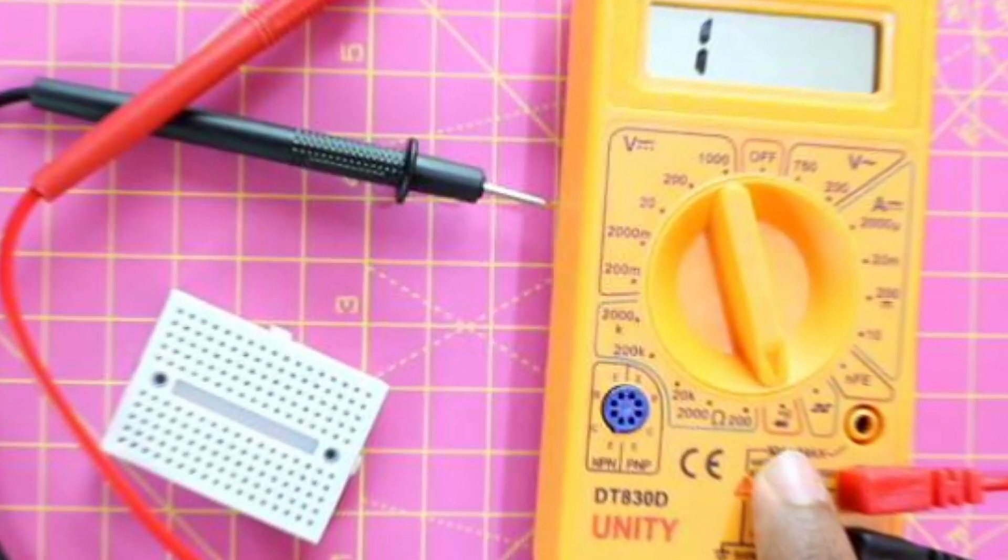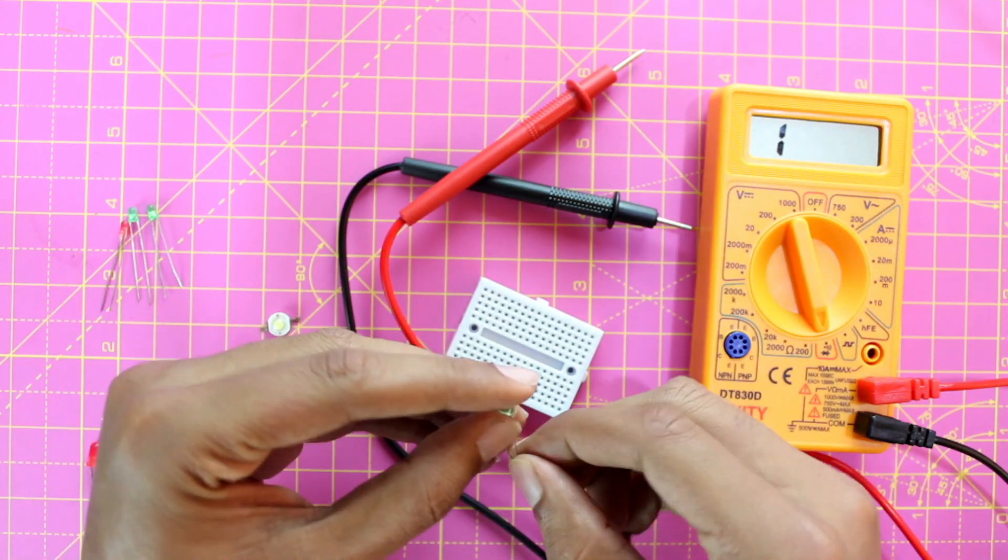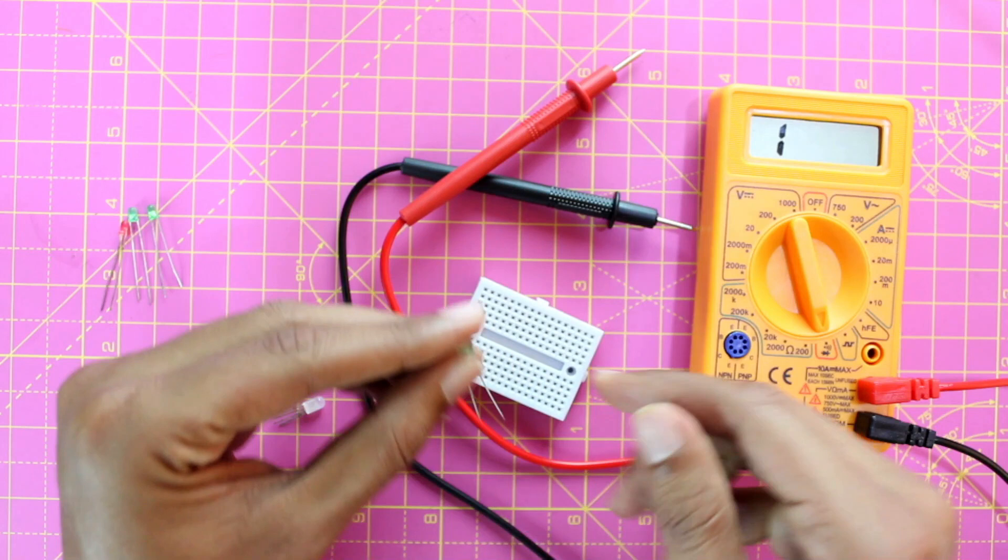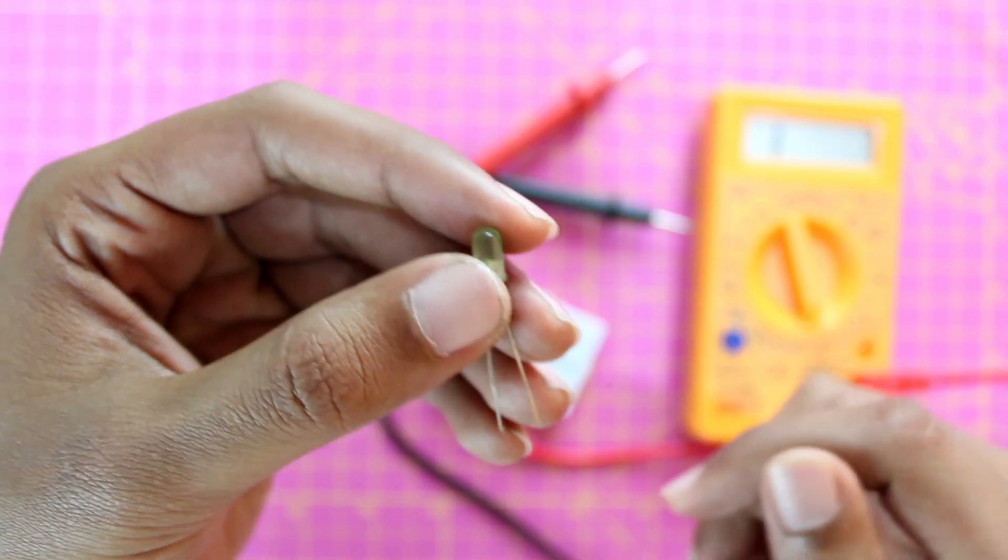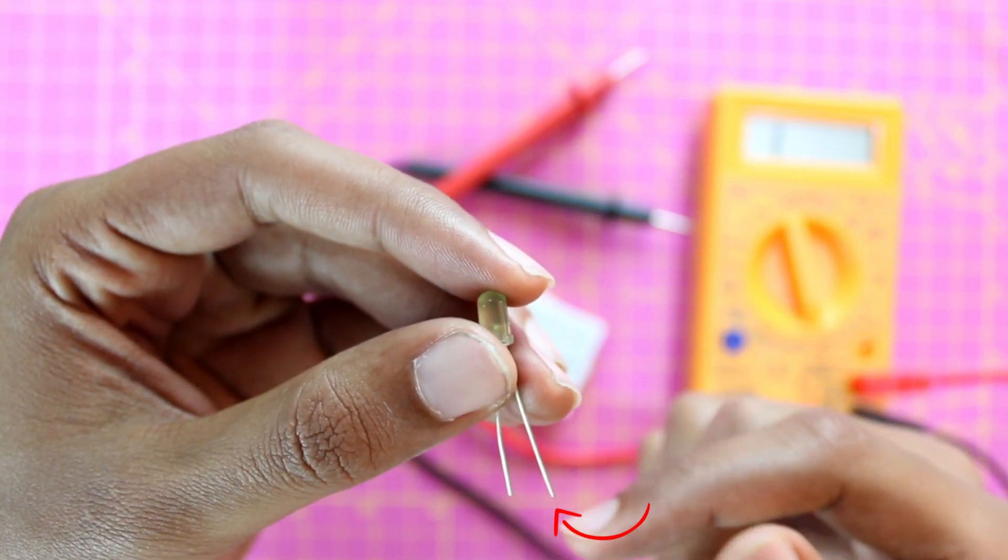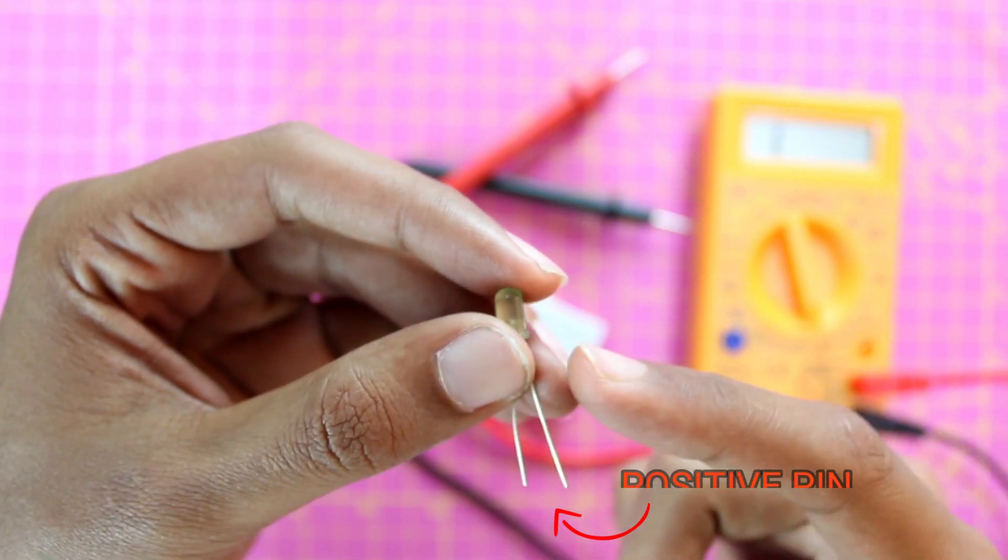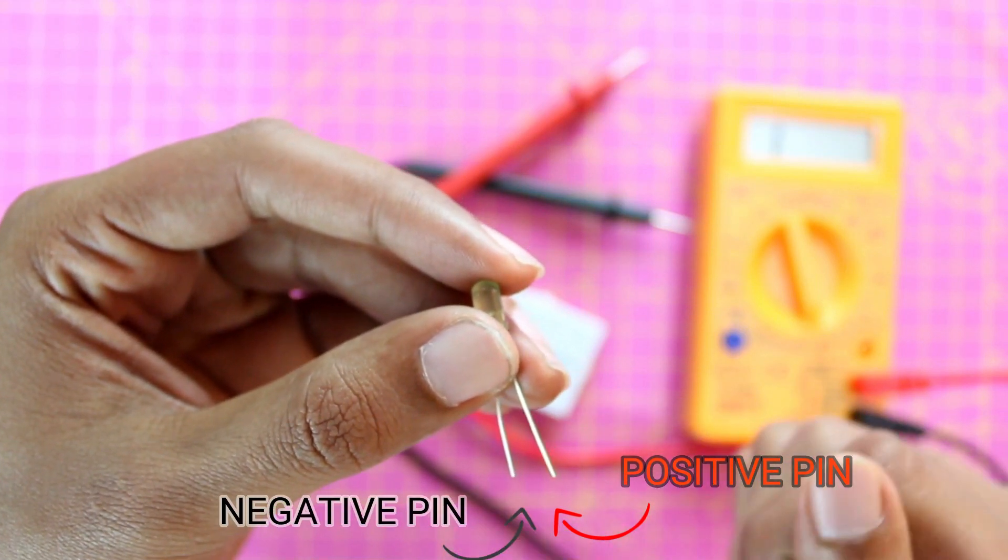Let's start testing this LED first. Before you start, you have to figure out which terminal of your LED is positive and which is negative. You can easily do that by comparing the size of your leads. The lengthier lead will be your positive and the shorter one will be your negative.